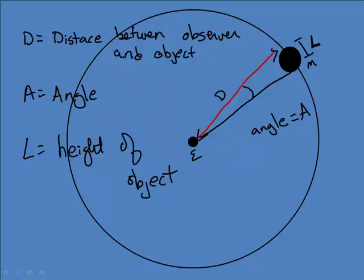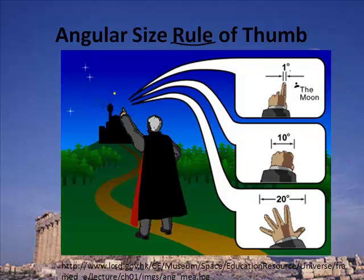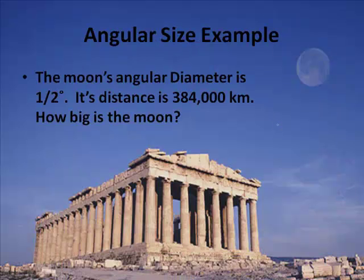Let's do a mathematical example problem. Before we do that, let me say one more thing. If you're trying to measure angular size, there is a rule of thumb that's pretty cool — the rule of the finger. If you take your index finger and cover the moon, that's considered a one-degree angle. A closed fist is 10 degrees, and an open hand obscuring it is 20 degrees. You can get a rough estimate of angular size using this rule of thumb.